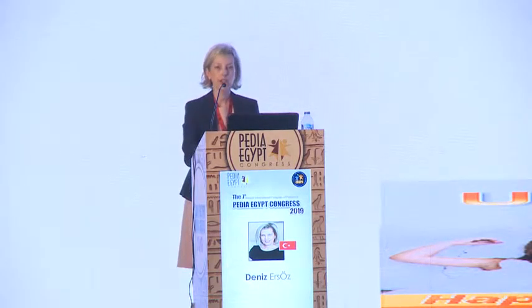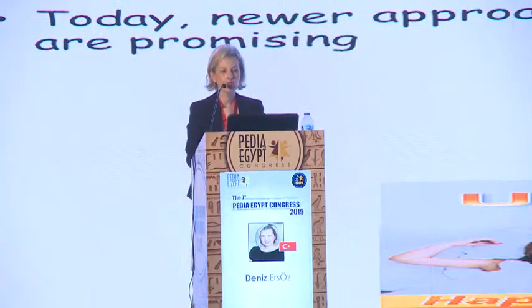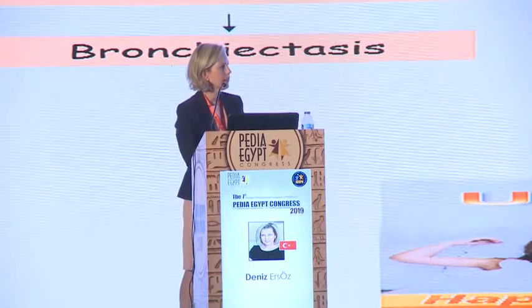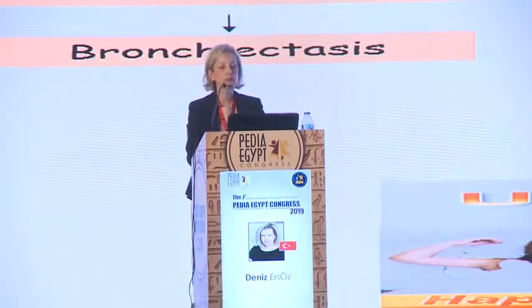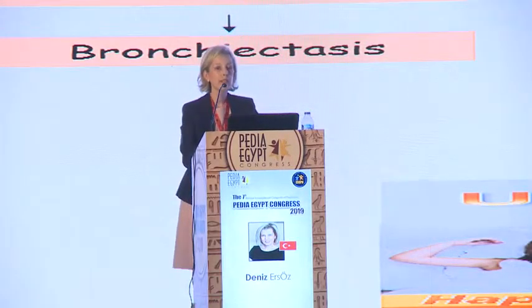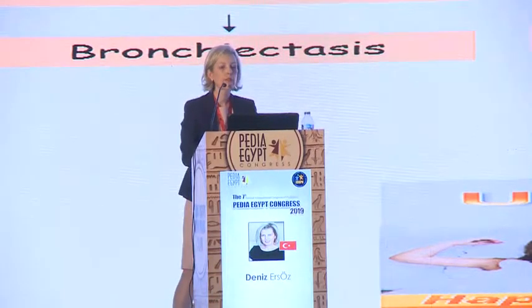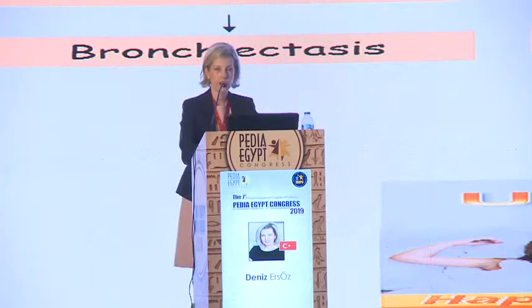Moving on to treatment of pulmonary disease in Cystic Fibrosis — until now we have been doing conventional symptom-based treatments focusing on mucus plugging, infection, inflammation, and nutritional support. However, with this treatment alone, patients progress to respiratory failure if lung transplantation is not performed. Today, newer approaches targeting the basic defect in CFTR are very promising. To decrease bronchial obstruction, we decrease mucous viscosity, augment clearance by recombinant human DNase, hypertonic saline, and chest physiotherapy. To treat infection we use antibiotics — intravenous, oral, or inhaled. To decrease inflammation we use anti-inflammatory drugs. For end-stage bronchiectasis, lung transplantation is needed.